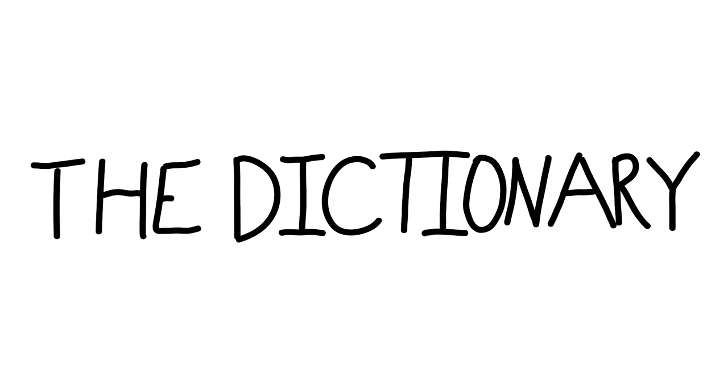Next we have bentrovato, two words. First word is bent, second word is T-R-O-V-A-T-O. It is an adjective from 1874. Characteristic or appropriate, even if not true, as in the story is bentrovato. This is Italian and it literally means well found. Next we have bentwood, adjective from 1862. Made of wood that is bent rather than cut into shape, as in bentwood furniture. Bentwood is also a noun.